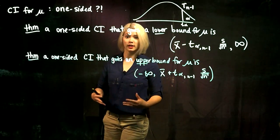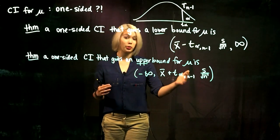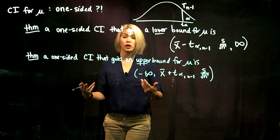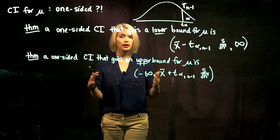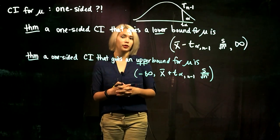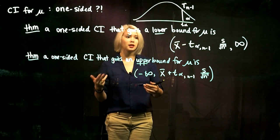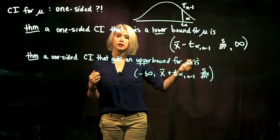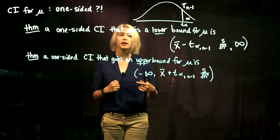Almost always we're interested in two-sided confidence intervals for parameters, meaning we have a lower endpoint and an upper endpoint. But in some cases we're just interested in an upper bound or a lower bound, so we can create a one-sided confidence interval. We'll look at the confidence interval for mu when sigma is unknown, and get an upper bound confidence interval and a lower bound confidence interval.